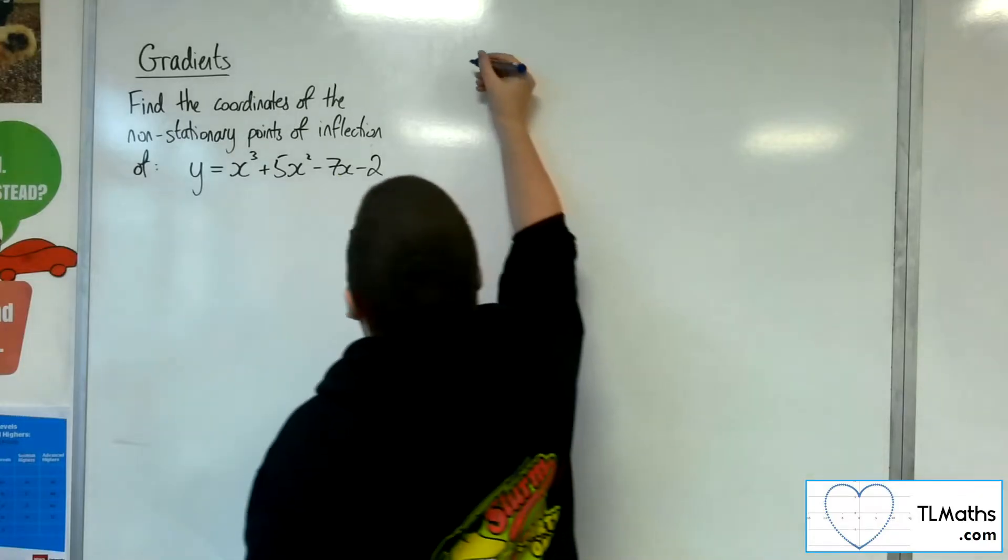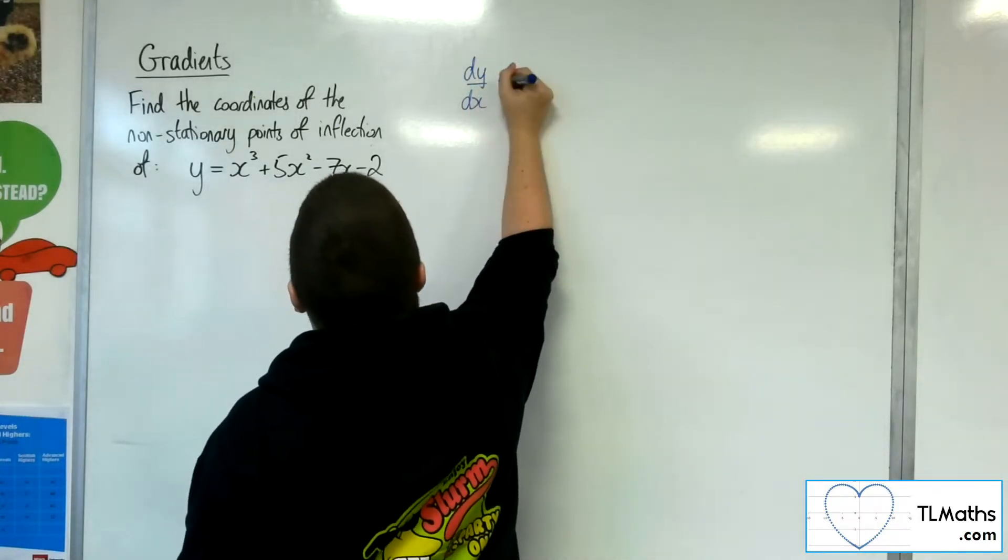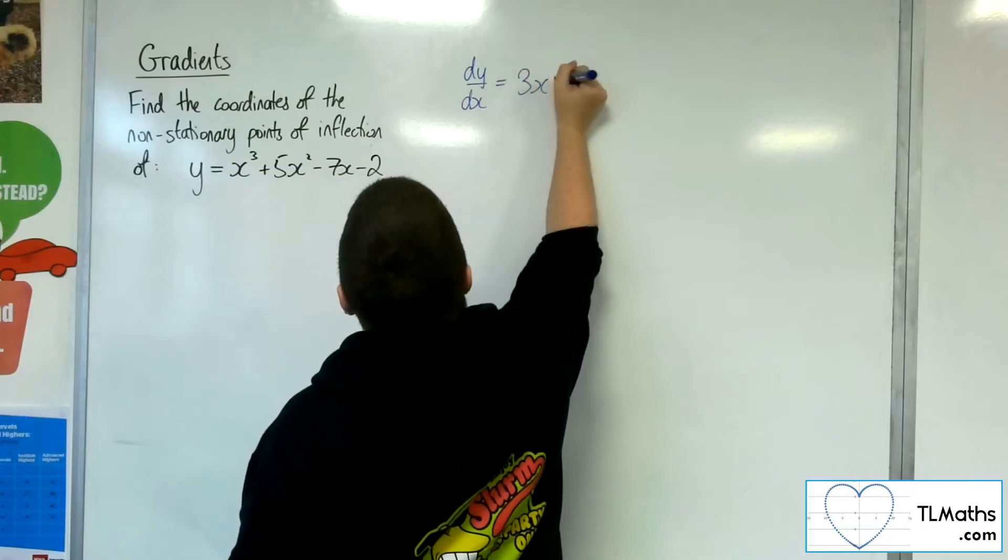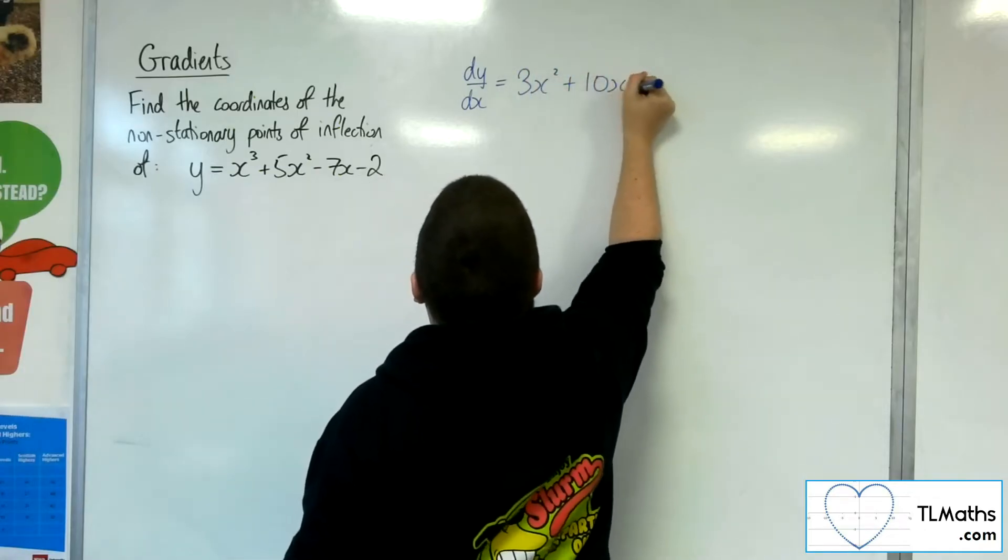The first thing that we want to do is to find the first derivative dy by dx. So that's 3x squared plus 10x minus 7.